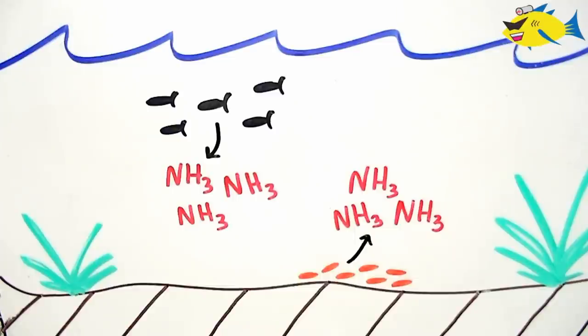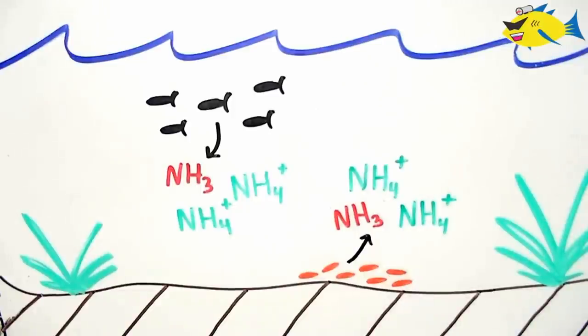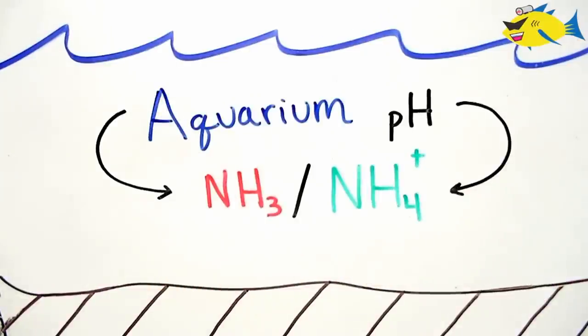Now when this ammonia is released, the majority of it quickly picks up a proton, becoming the relatively non-toxic form ammonium. Thus a ratio between the two is born. Now this ratio is strictly controlled by the relative pH of our aquarium.